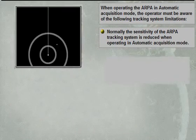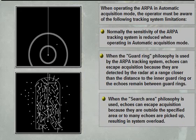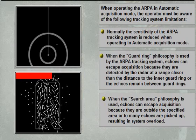When the guard ring philosophy is used by the ARPA tracking system, echoes can escape acquisition because they are detected by the radar at a range closer than the distance of the inner guard ring, or the echoes remain between guard rings. When the search area philosophy is used, echoes can escape acquisition because they are outside the specified area or too many echoes are picked up.